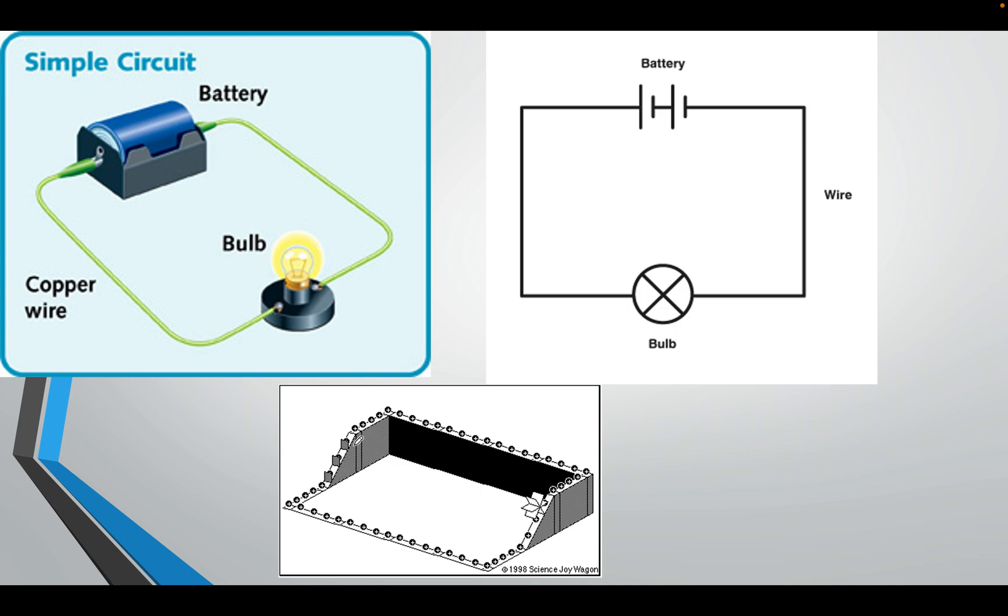And if you look at this, this here is a gain in potential energy. This is the battery giving energy to each charge, and as it moves through the wire and it goes to the bulb, it uses the energy. So it's a potential drop. The potential energy is dropped. This is what happens in a simple circuit.